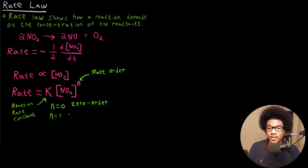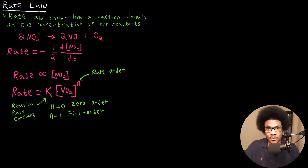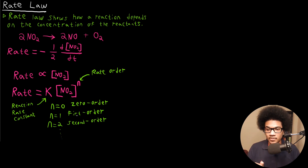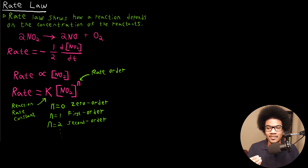If N is equal to one, that would be a first order reaction or first order rate law. What that means is that your rate has a linear dependence on the concentration of the reactant — it has a linear dependence on the rate of that reactant. If N is equal to two, that would be a second order reaction, meaning the rate has a quadratic dependence on the concentration of the reactant. Zero order, first order, and second order are the three that you would really have to be concerned with throughout your studies of chemistry.